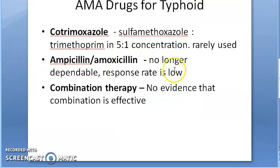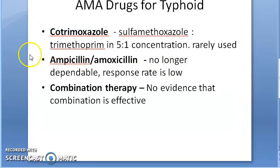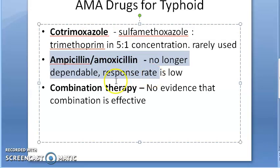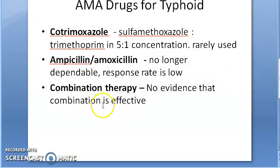Moving to less important options: cotrimoxazole, which is a combination of sulfamethoxazole and trimethoprim in a 5-to-1 concentration, is rarely used now. Ampicillin and amoxicillin are no longer dependable — the response rate is low. Combination therapy has no evidence that it works.